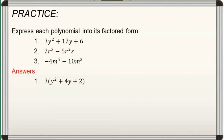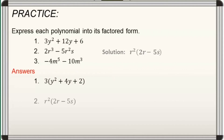For number 2, the common monomial factor is r squared. So, we factor out r squared and find the remaining factor by dividing each term of the given polynomial by the common monomial factor. 2r cubed divided by r squared is 2r, and 5r squared s divided by r squared is 5s. Hence, the factored form of 2r cubed minus 5r squared s is r squared times (2r minus 5s).